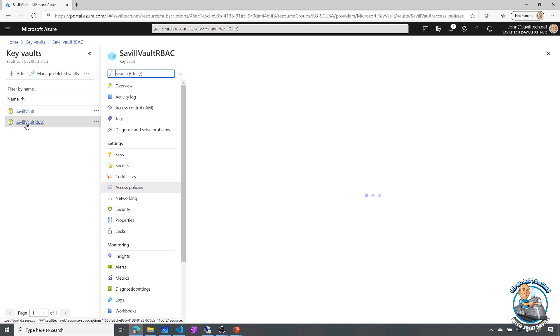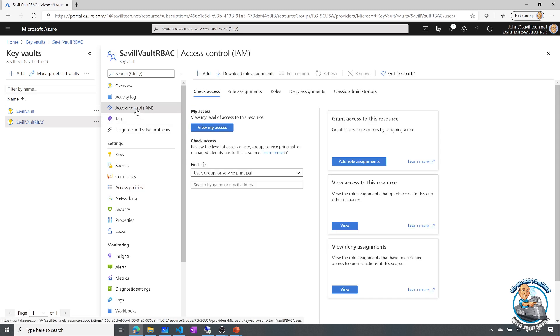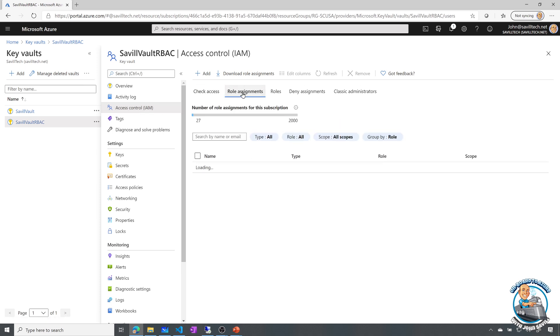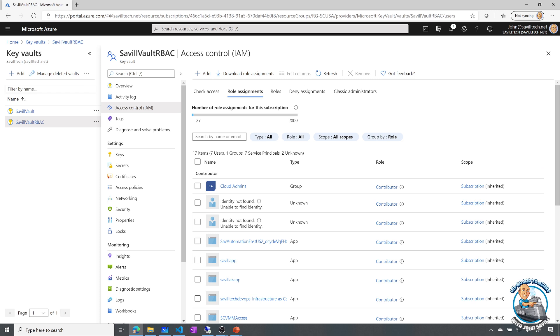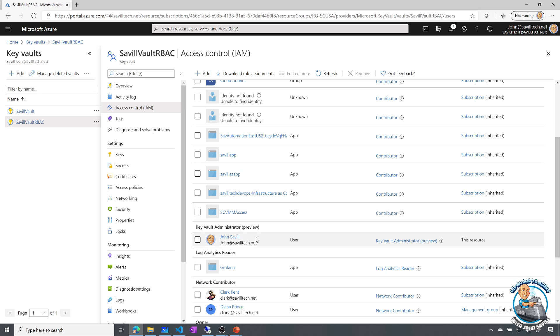But now you have this Azure role-based access control option. So if I go to my RBAC vault, we can see I've now got that turned on. So there are no policies to configure. Now I actually have access control. Now I'm just using roles at this point. So I could set these at a subscription, a resource group, or even an individual secret. Now what I had to do initially was so I could even see secrets or create them, I gave myself the key vault administrator permission on this resource, so this particular key vault.